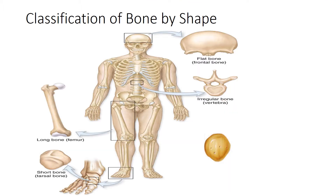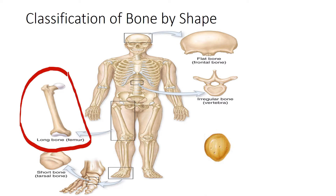We classify our bones based on their shape. The first type is long bones, which are greater in length than in width — an example would be our femur, or thigh bone. The next classification is short bone, which are nearly equal in length as in width. An example would be the tarsal bones within the foot.